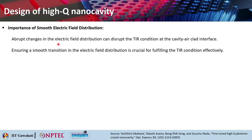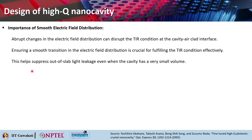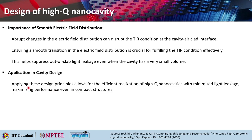Regarding the importance of smooth electric field distribution: abrupt changes in the electric field distribution can disrupt the total internal reflection condition at the cavity-air clad interface. Ensuring smooth transitions in the electric field is crucial for fulfilling total internal reflection conditions effectively, and this also helps suppress out-of-slab light leakage even when the cavity has a very tiny volume.